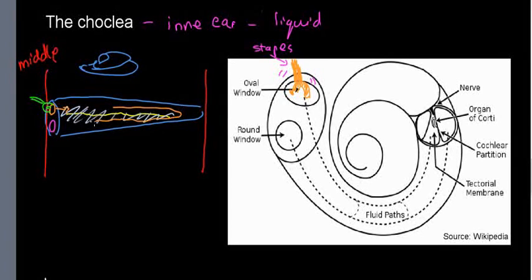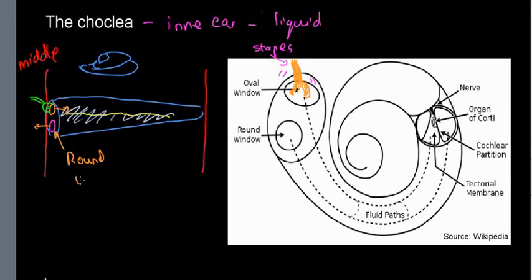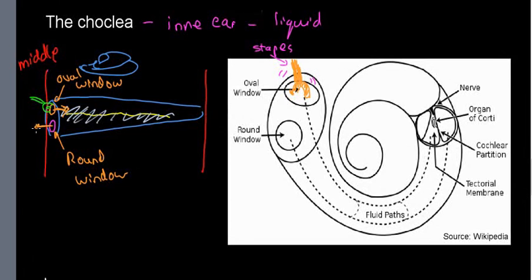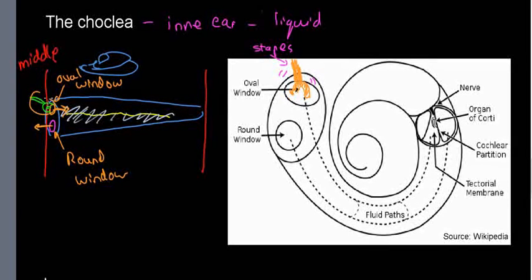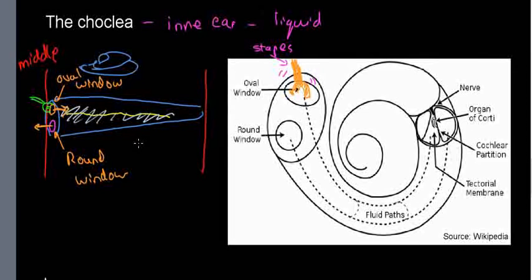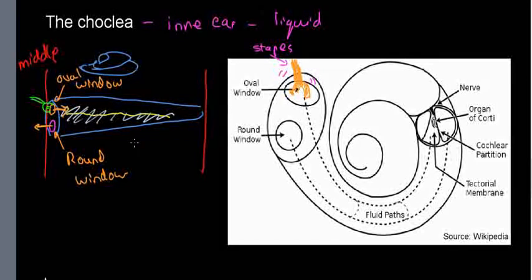The mechanical wave propagates through and the round window is pushed out. The round window is the counterpart of the oval window — when the oval window goes in, the round window goes out, and vice versa. This happens because the inside is an aqueous solution that cannot be compressed.